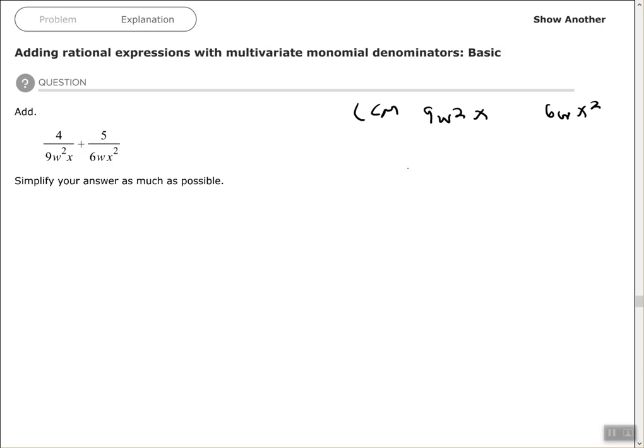Now let's look at the variables. Remember, every variable that you see must be represented in your least common multiple. We have w² and w—use the highest exponent, w². We have x and x²—use the highest exponent, x². All the variables are represented.